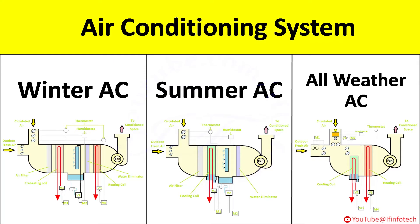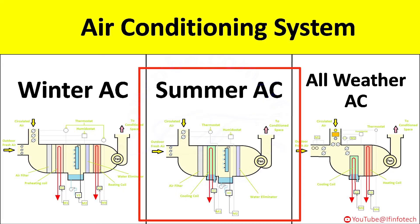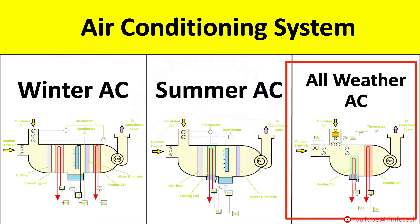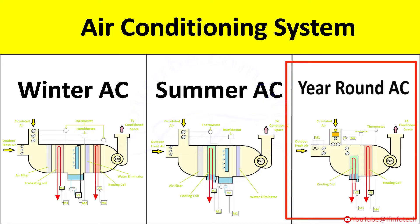Hi everyone. In this session we are going to learn about types of air conditioning systems. There are three types: summer AC, winter AC, and all weather AC. All weather AC is also known as year-round AC.